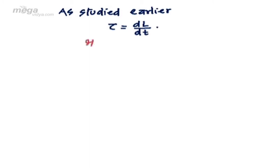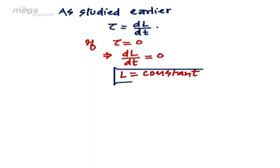Now if τ is equal to zero, this implies dL/dt will be equal to zero, which will give L is equal to constant. Since we know that differentiation of constant is zero, thus the angular momentum will be constant.